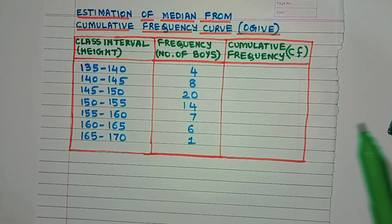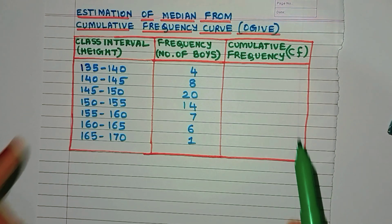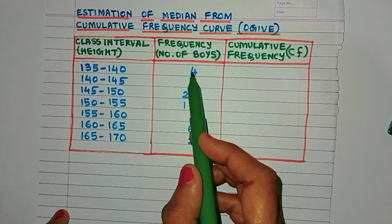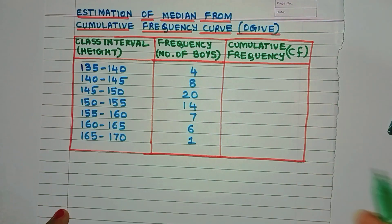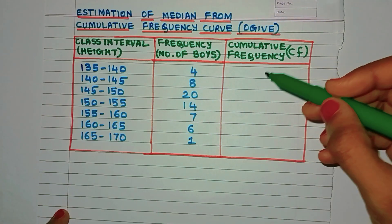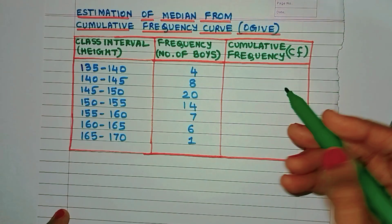Now what is cumulative frequency? Yes, it's the added frequency. How do we find it? Well, it's very easy. For the first class interval, the frequency automatically becomes the CF value also, because there is no frequency before this.